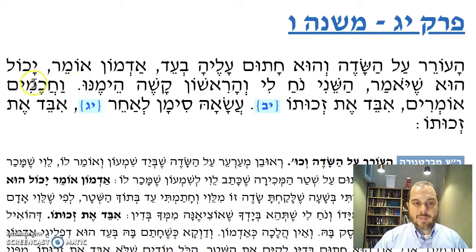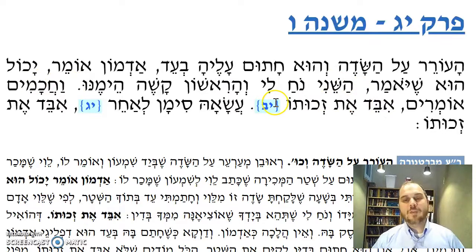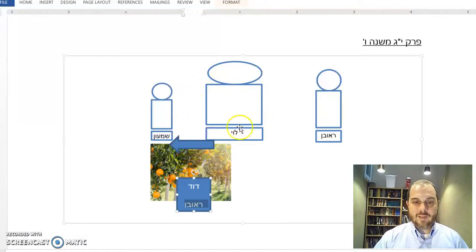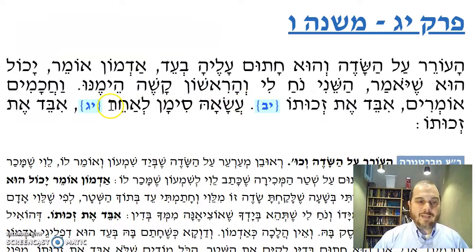Le'chachamim omrim, ibeidet z'chuto. Sorry, if you sign on the contract, that's as if you're admitting that it belonged to Levi, and therefore you're out. Sorry Reuven, you have no claim on the field. Asa siman l'acher, ibeidet z'chuto.